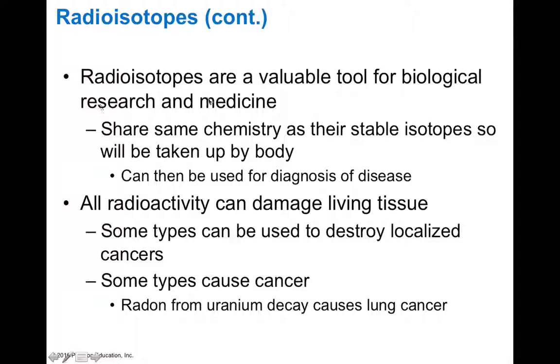Radioisotopes are a valuable tool for biological research and medicine because they share the same chemistry as stable isotopes and can be taken up by the body. This can be used for diagnosis of disease. Medical imaging uses radioisotopes to see tissues better. We can use radioisotopes to kill cancerous cells. All radioactivity can damage living tissues. Some types can be used to destroy local cancers. With thyroid cancers, we can administer radioactive iodine, which degrades into one of the noble gases. Some types cause cancer. Things like radon from uranium decay are one of the more common causes of lung cancer.